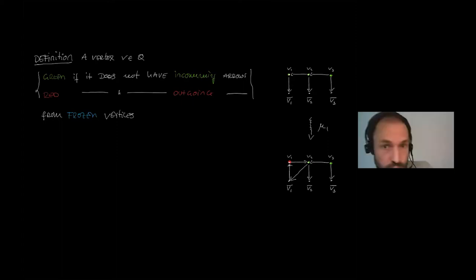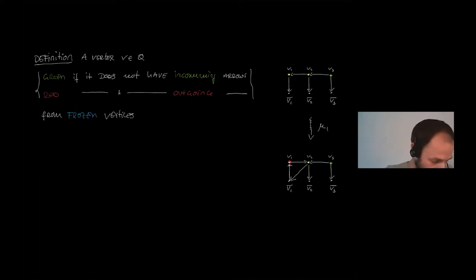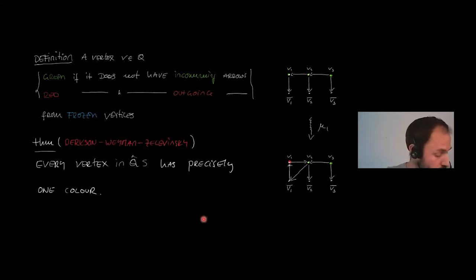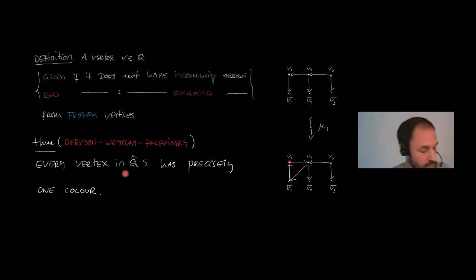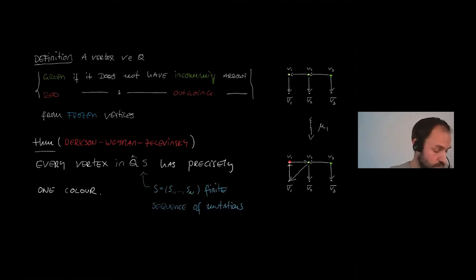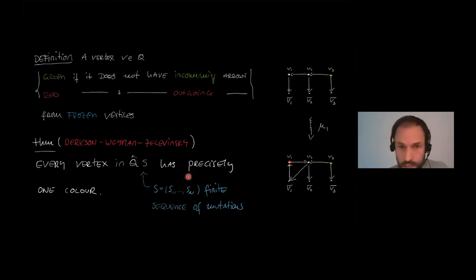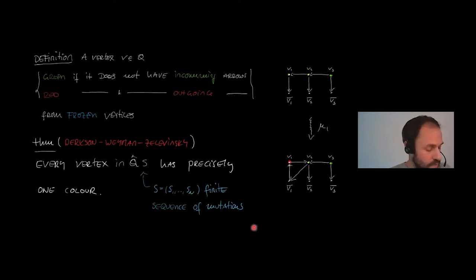When we mutate at vertex v1 in the framed quiver, we get a transit from v2 to v1-bar, and the arrow from v1 to v1-bar turns around — making v1 red while the other two vertices stay green. There is a theorem due to Derksen, Weyman and Zelevinsky: if we start with a framed quiver and mutate by a sequence S, then after doing this every vertex will have precisely one of the two colors — red or green. They are always partitioned.